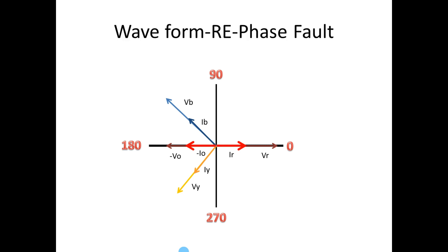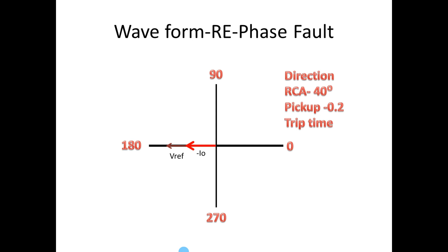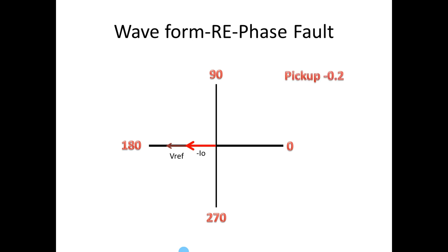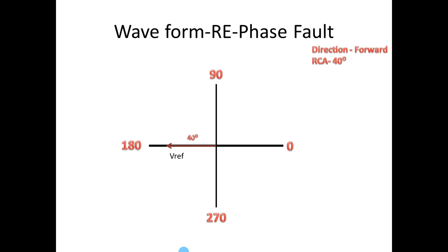Now we will see briefly the R phase earth fault. For this, V reference should be directly opposite to VR. For directional earth fault we need four important things: first, direction; second, RCA angle; third, pickup value; fourth, trip time. The most important is the pickup value — the fault current should be above the pickup value. The direction is forward, so V reference should be opposite to VR and RCA is 40 degrees. We take V reference as the reference point, make 40 degrees towards the clockwise direction and draw a line — this is the MTL.